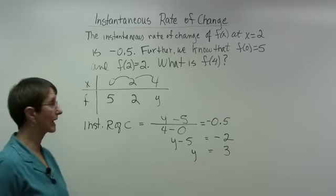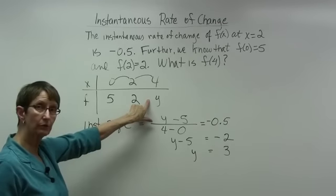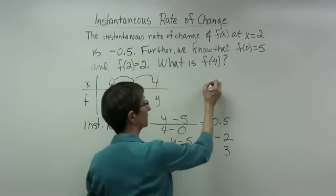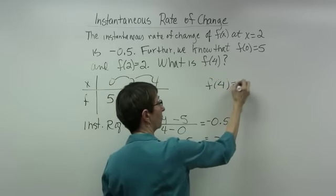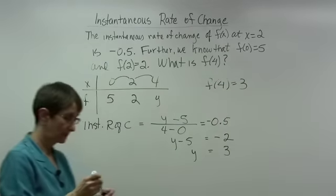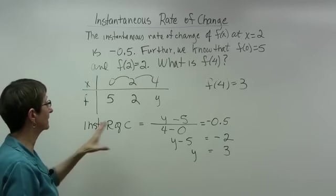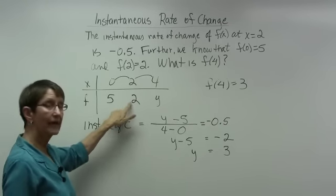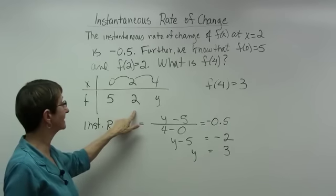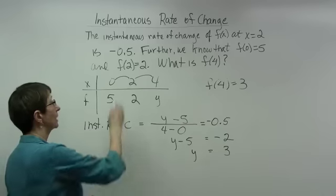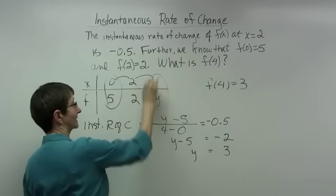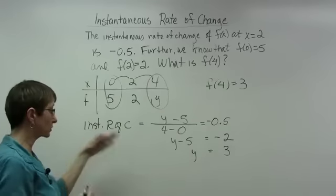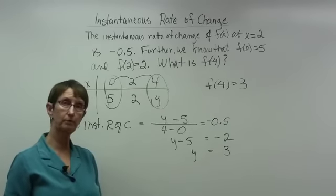The function value I'm looking for is 3. To answer the question, f of 4 is equal to 3. I used the formula for instantaneous rate of change — change in y over change in x — and I did not need the value at x equal to 2 because the shortcut method just uses the endpoints equally spaced from the center point.